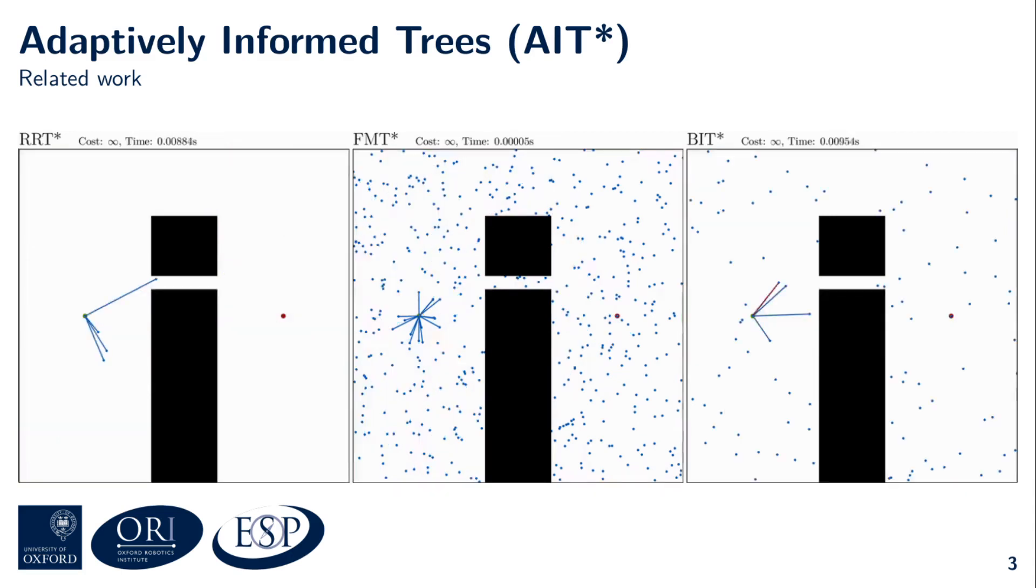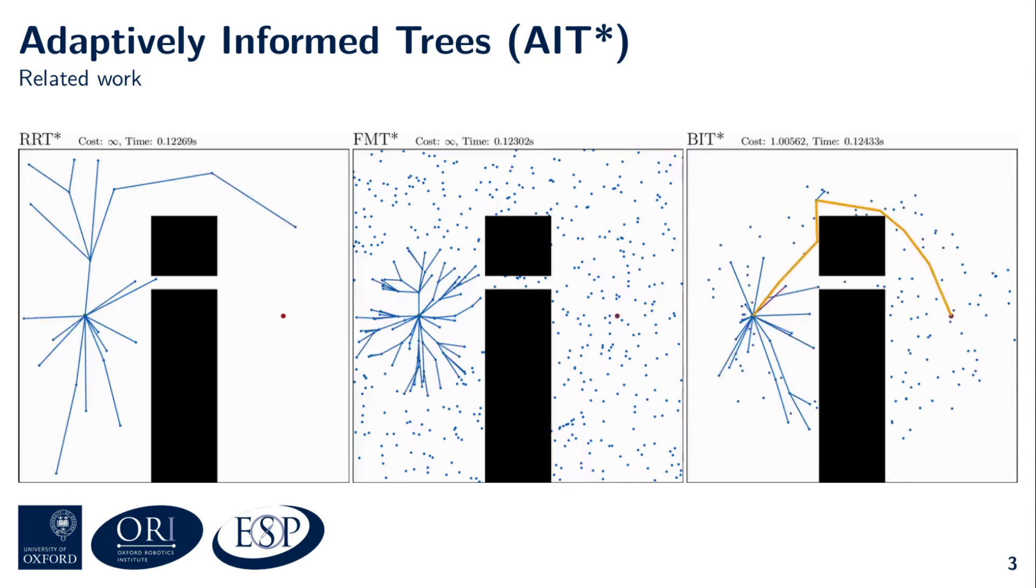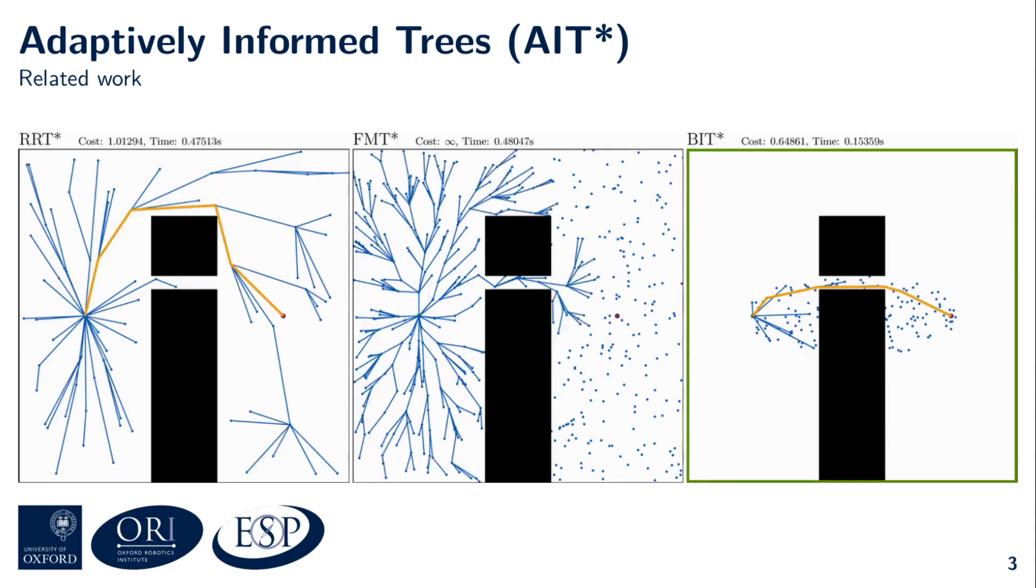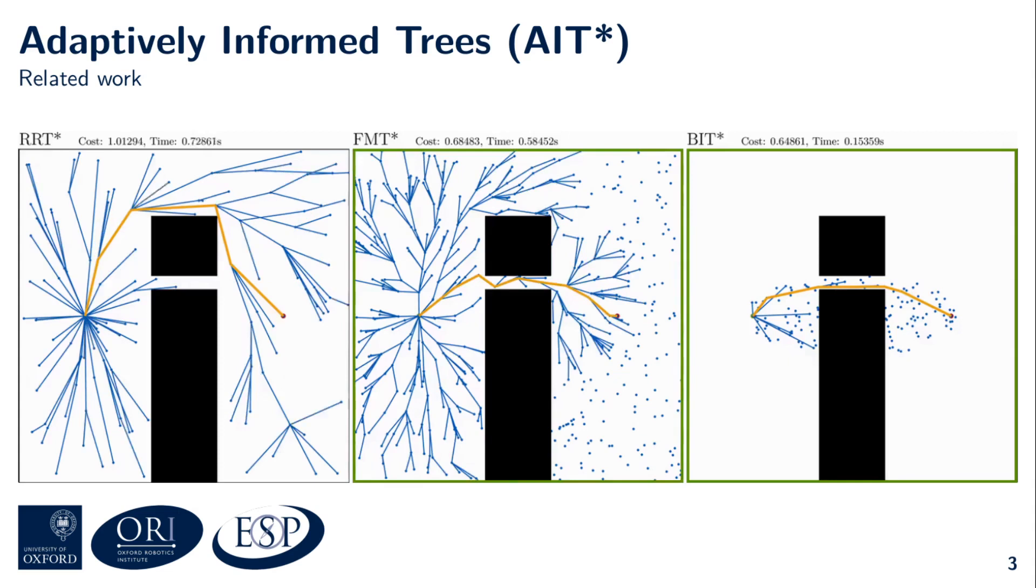BIT* is able to mitigate this effect to some extent, as it can use the Euclidean distance as the cost-to-go heuristic to order its search. But because this heuristic isn't problem-specific, edges towards the lower half of the state-space appear equally promising as edges towards the upper half.